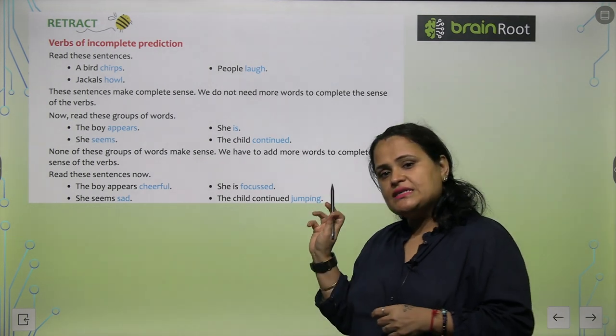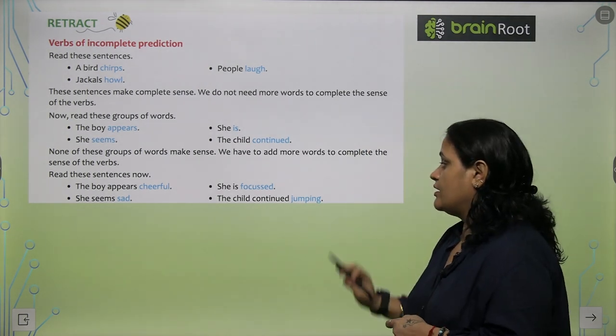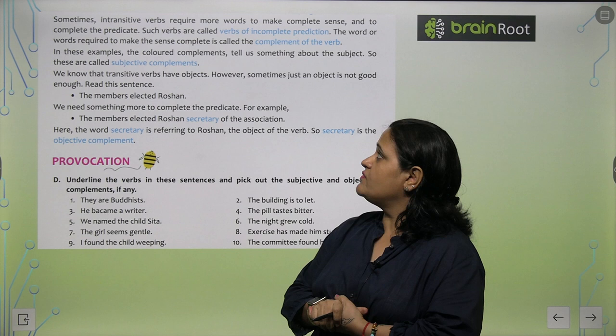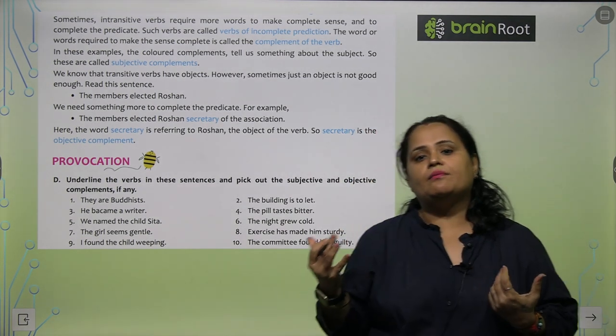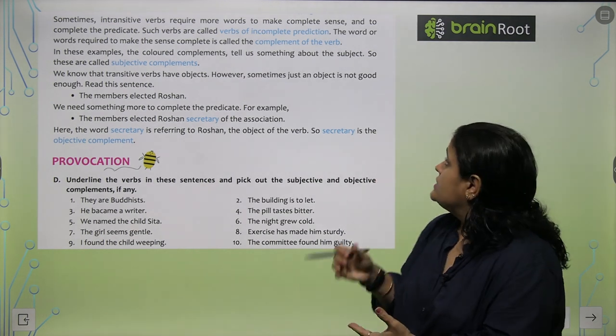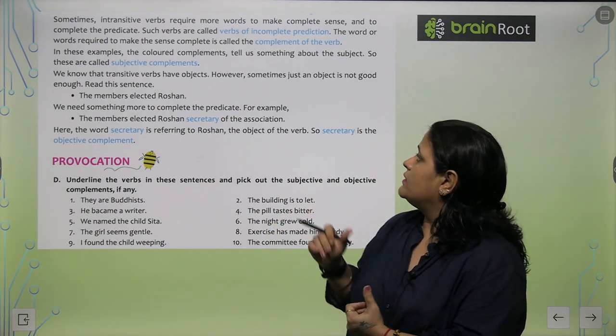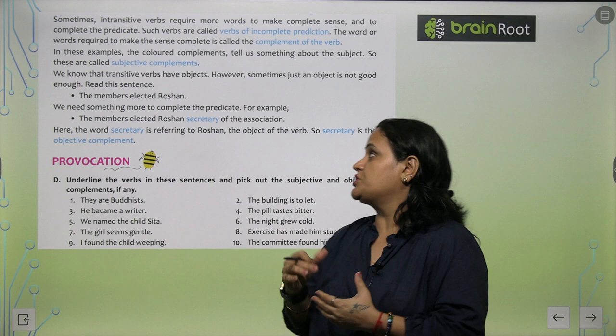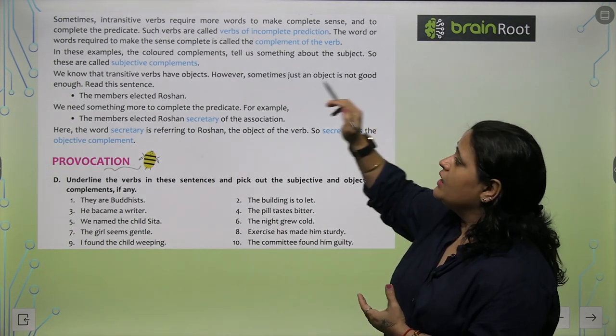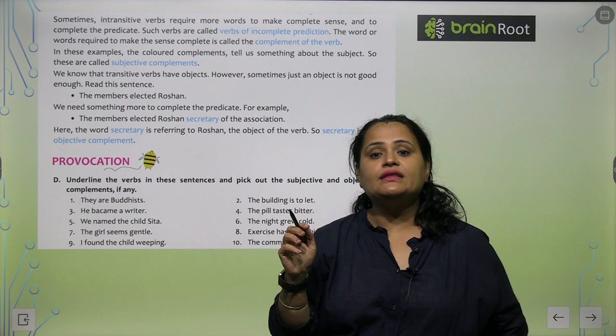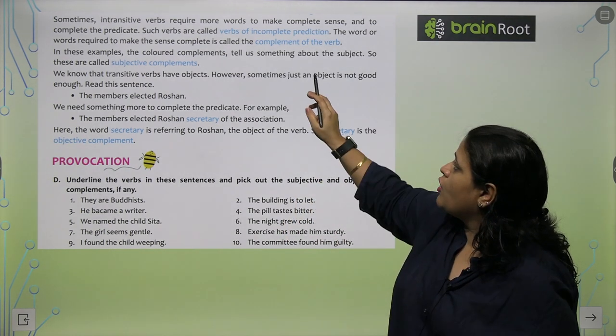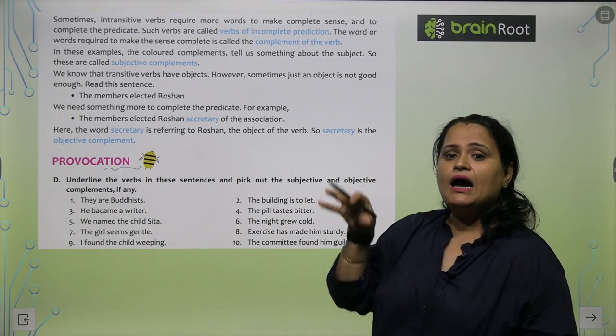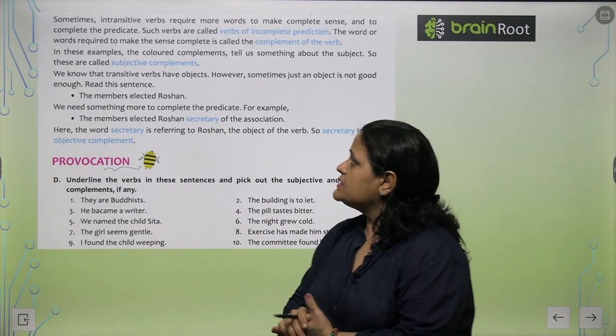So read these sentences now: The boy appears cheerful, she is focused, she seems sad, the child continued jumping. Ab ye sare sentences ek sense bana rahe hai because they need object with these. Sometimes intransitive verbs require more words to make complete, and to complete the predicate. Such verbs are called verbs of incomplete prediction. Their word or words required to make the sense complete is called the complement of the verb. Verb ko complement dete hai hum un words ko add karke.